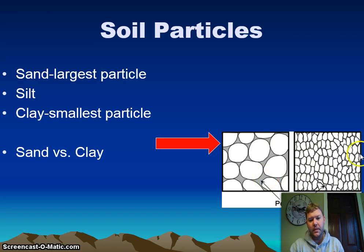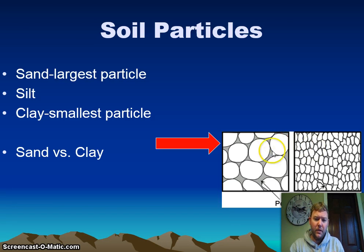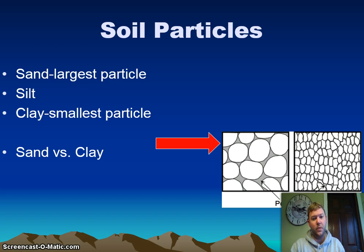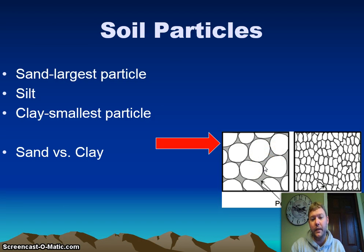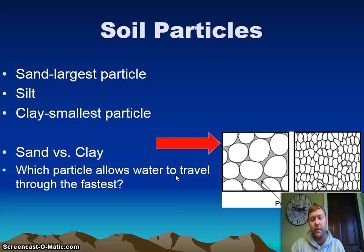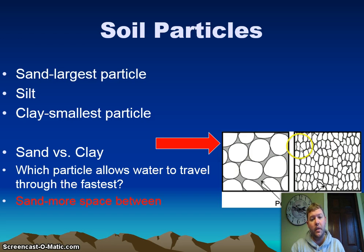If you look over here, we have an example of sand versus clay. Sand particles are huge compared to clay, which you cannot even see with the human eye. Notice all the space between the sand particles and very few spaces between the clay. Think about the beach — when water washes on shore and then washes away, the sand quickly dries out because it has so many spaces. Sand allows water to travel through the fastest.